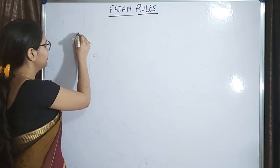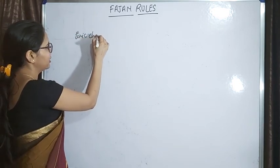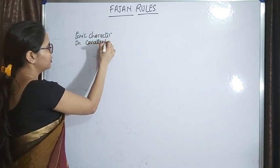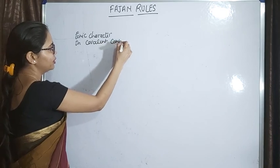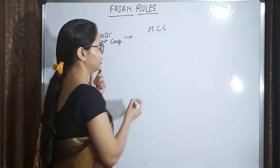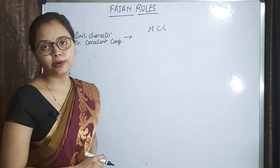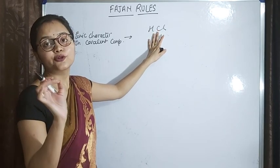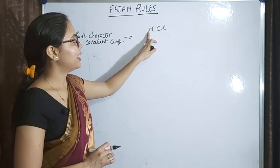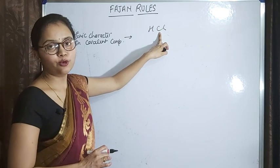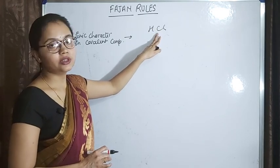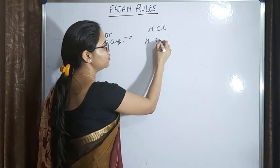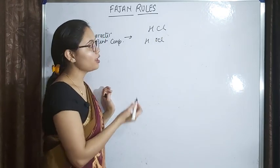The topic is ionic character in covalent compounds. Let's take one covalent compound like HCl. In heteroatomic molecules, there will definitely be an electronegativity difference. As in HCl, we can see that chlorine is much more electronegative than hydrogen.